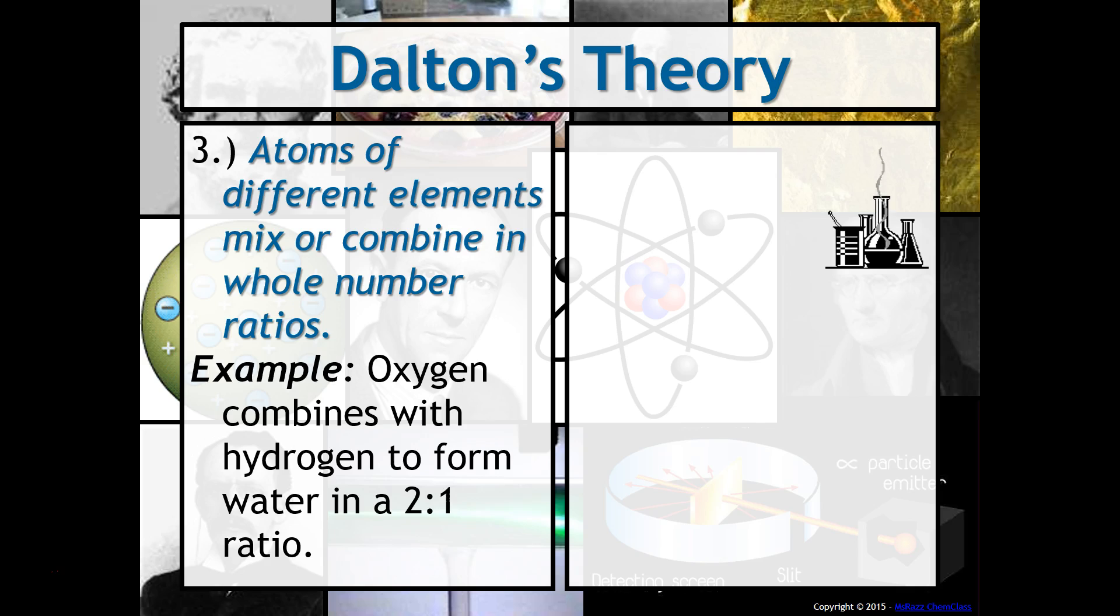The third is that atoms of different elements mix or combine in whole number ratios. So for example, when you make water, oxygen combines with hydrogen to form water in a two to one ratio. That's why it's called H2O.